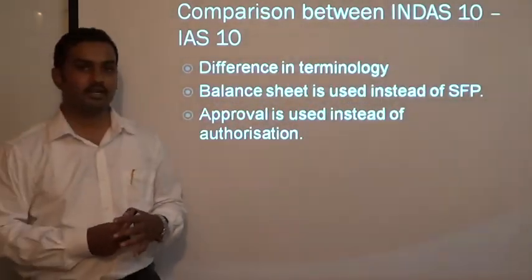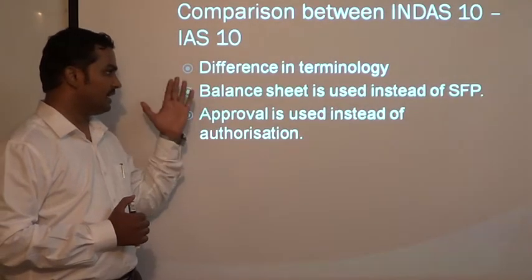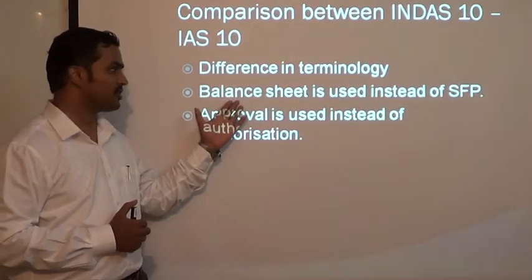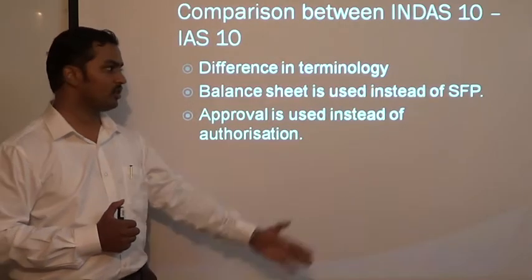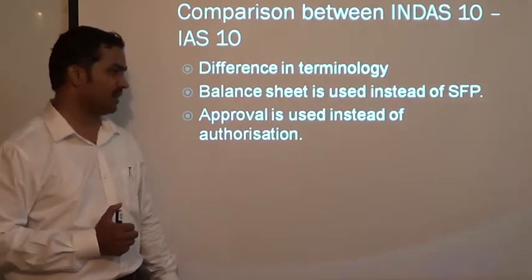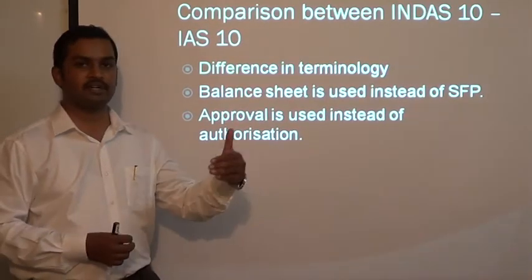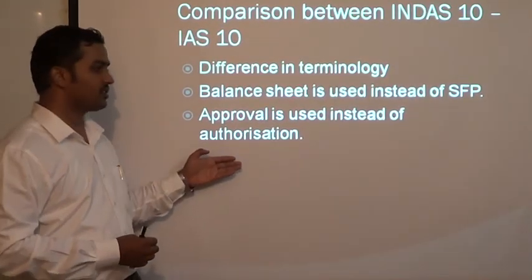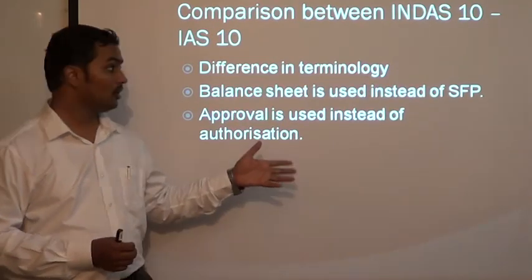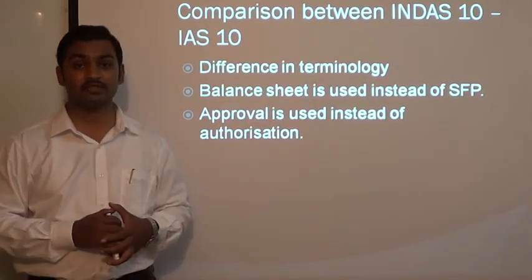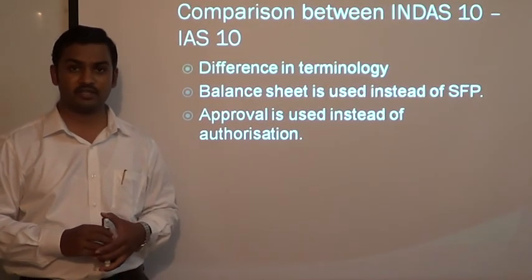The last comparison is a change in terminology: in India, we use the term 'balance sheet', whereas in international accounting we use 'statement of financial position'. Also, in India we talk about 'approval' of financial statements, whereas IAS 10 uses the term 'authorization' of financial statements. This was the entire Indian Accounting Standard 10. I hope you were able to understand. Thanks a lot.